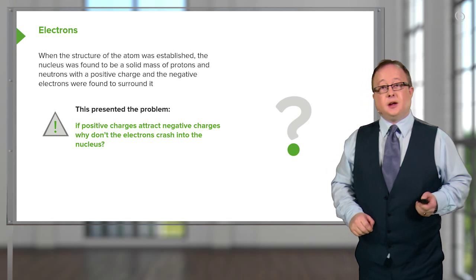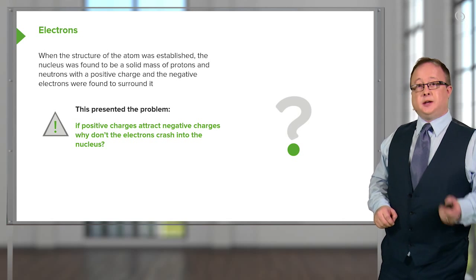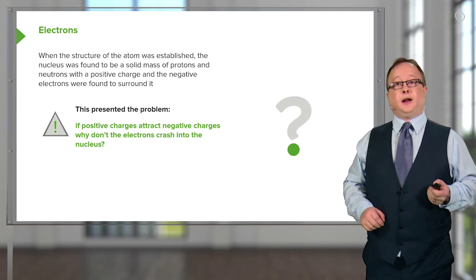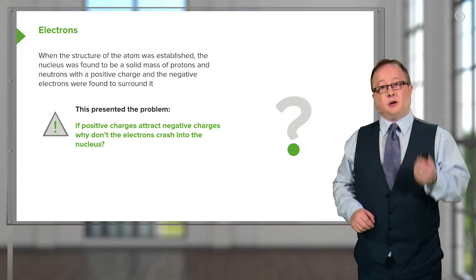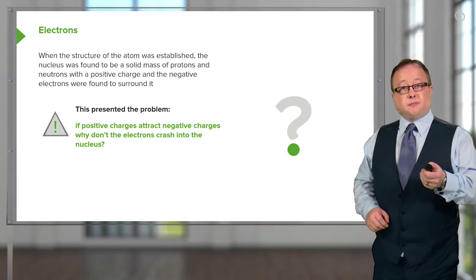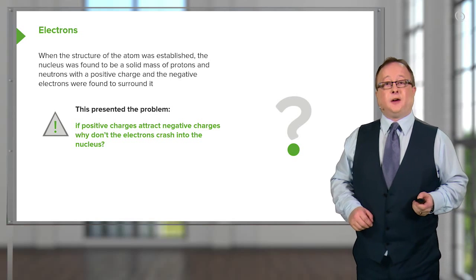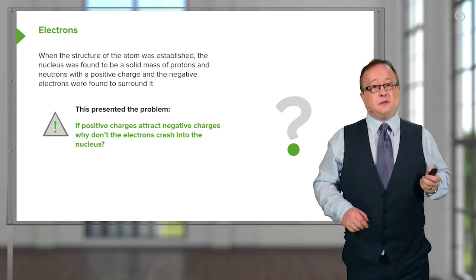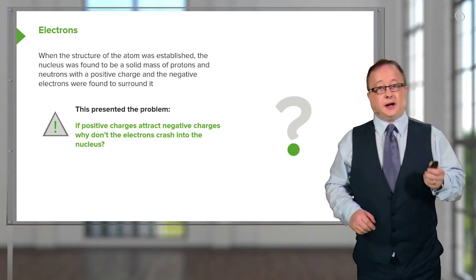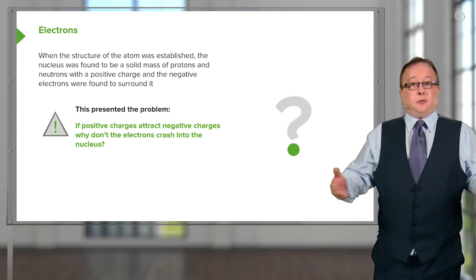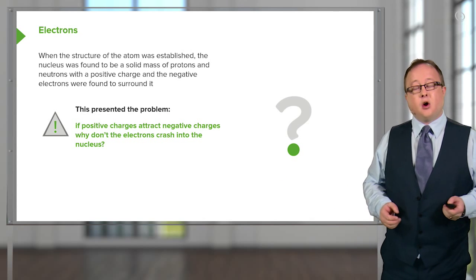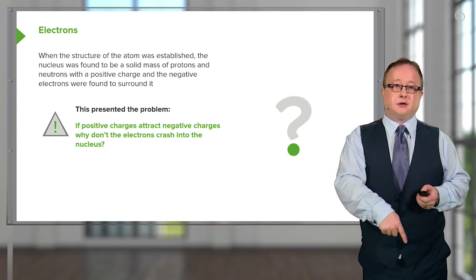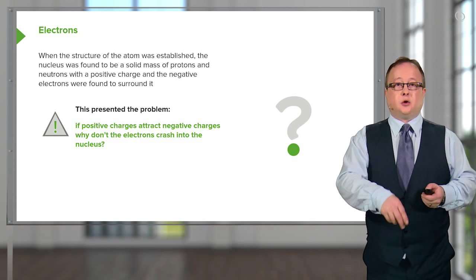However, this rather simplistic model, which implied that electrons existed only as particles, was fundamentally flawed by the question: if positive charges attract negative charges — and we know they do, opposites attract — why don't electrons crash into the nucleus?